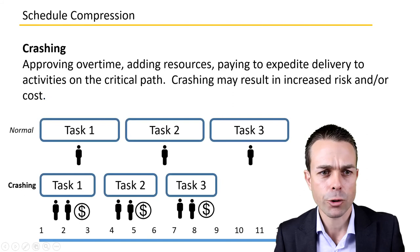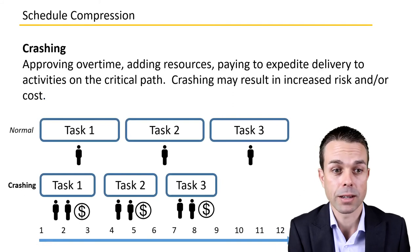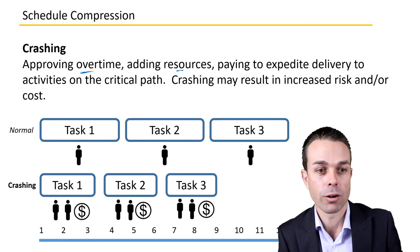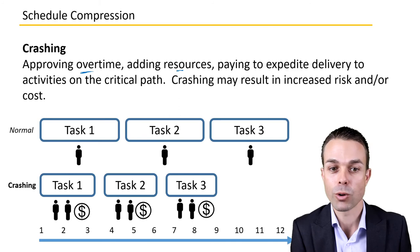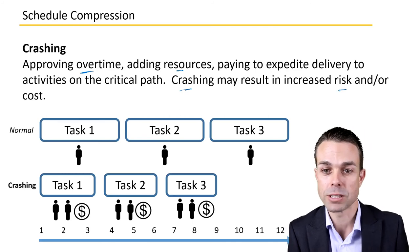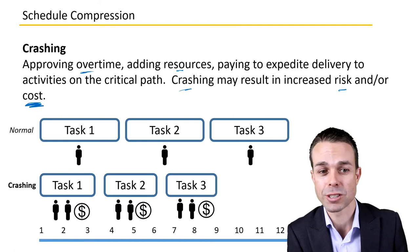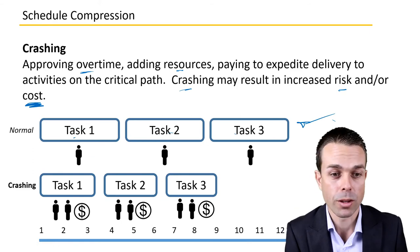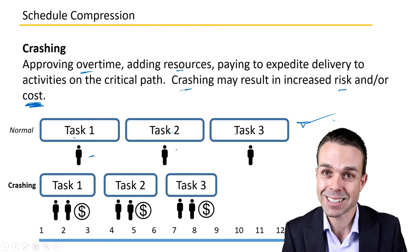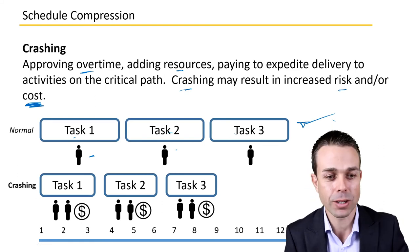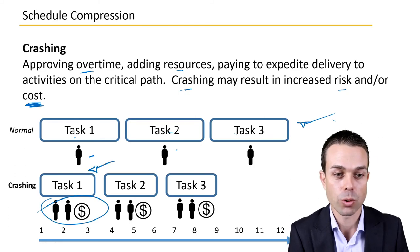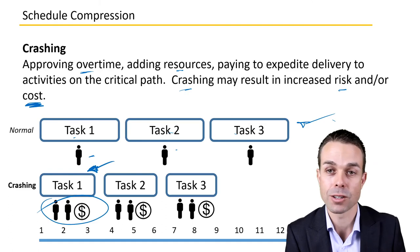Let's look at a few examples. Crashing might involve approving overtime, adding resources, or paying to expedite the delivery of activities on the critical path. Because of that, crashing may result in increased risk and certainly increased cost. As an example, at the top here we've got task one, task two, task three as our normal schedule with just one person assigned to each. But if we're crashing this project schedule, we're adding resources, and now we're able to shorten the time of those tasks.